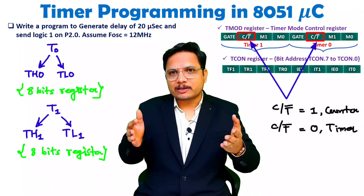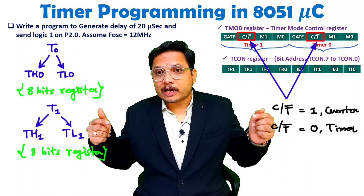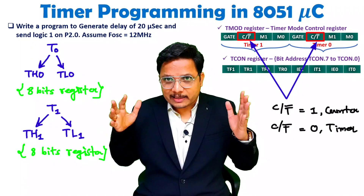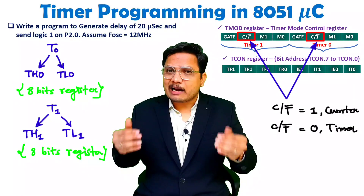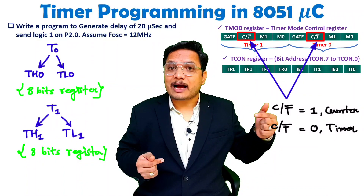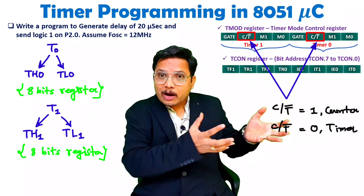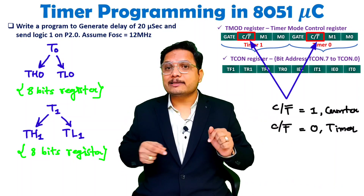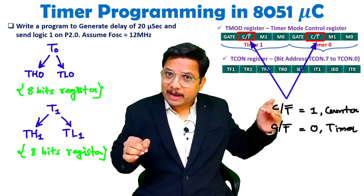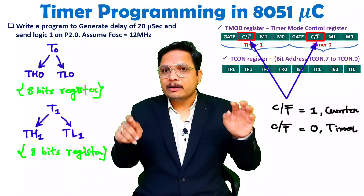You need to understand what counter and timer mean. Timer means we are taking internal clock input with 8051 — the 8051 has an oscillator clock inside, and that is used for generation of delay. When you want to operate as a counter, you take the clock from an external pin. So when you want to count an external event, you use it as a counter. That is defined inside the TMOD register.